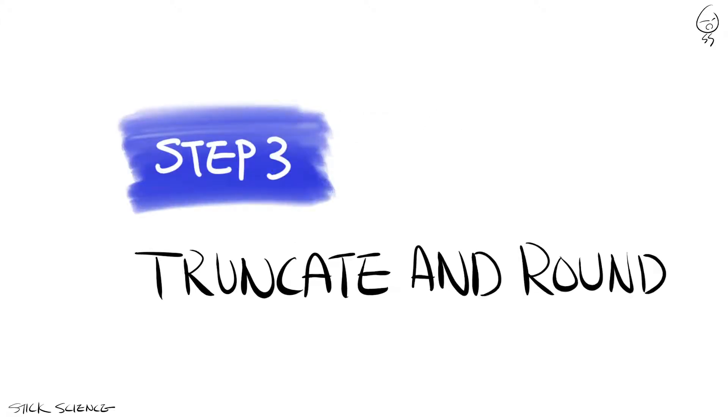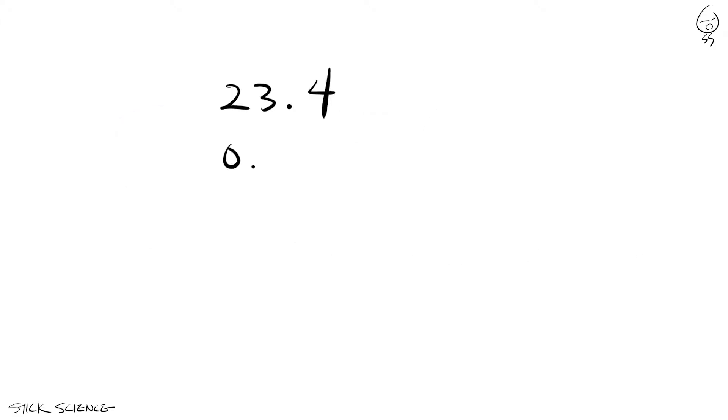Step three, truncate and round. The weakest link in our calculation had only two significant figures. Since the chain is only as strong as its weakest link, the result of our calculation can only have up to two significant figures and no more.